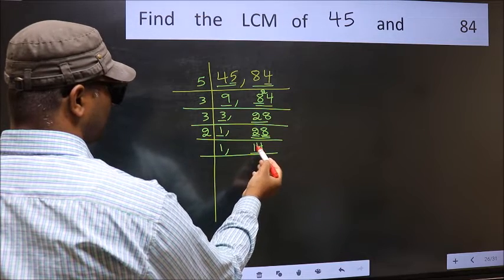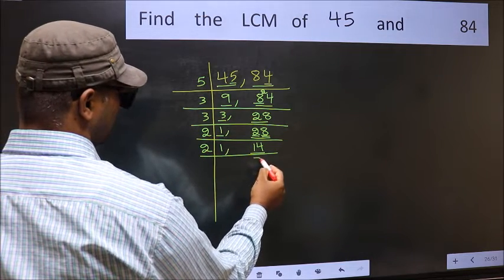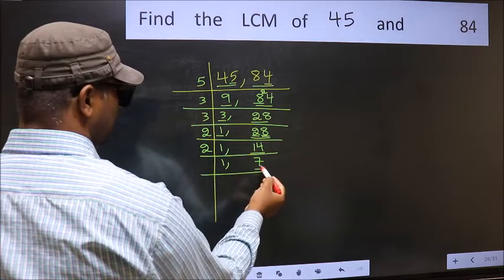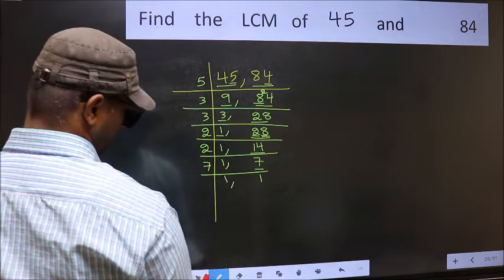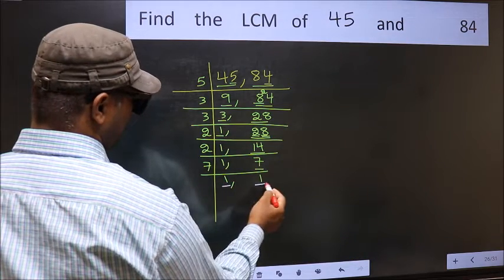Now here we have 14. 14 is 2, 7 is 14. Now we have 7. 7 is a prime number. So 7, 1 is 7. So we got 1 in both the places.